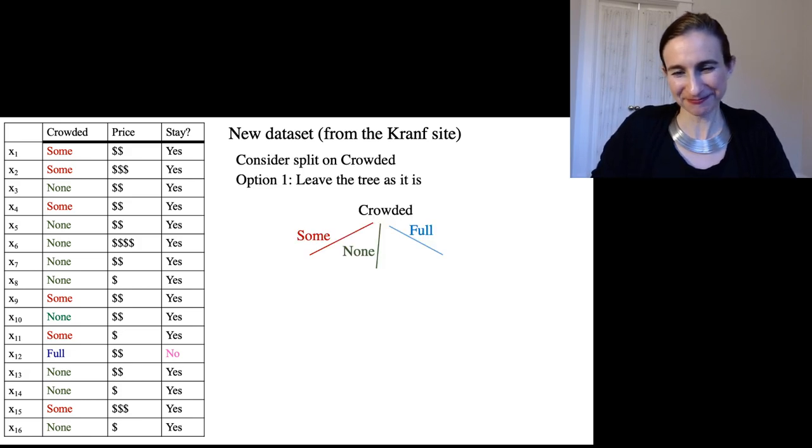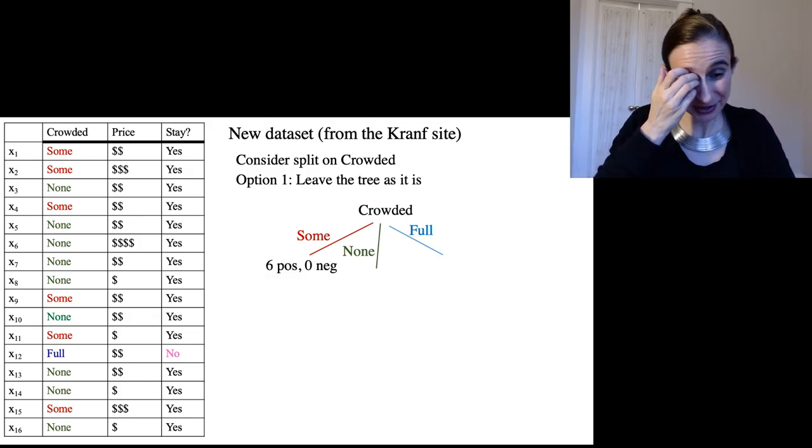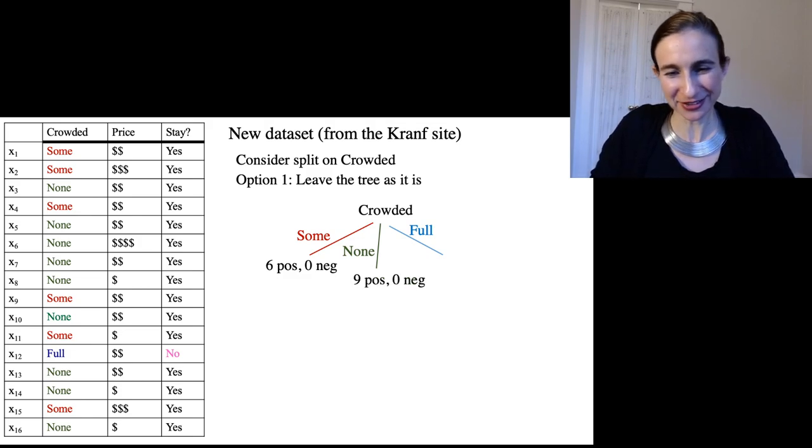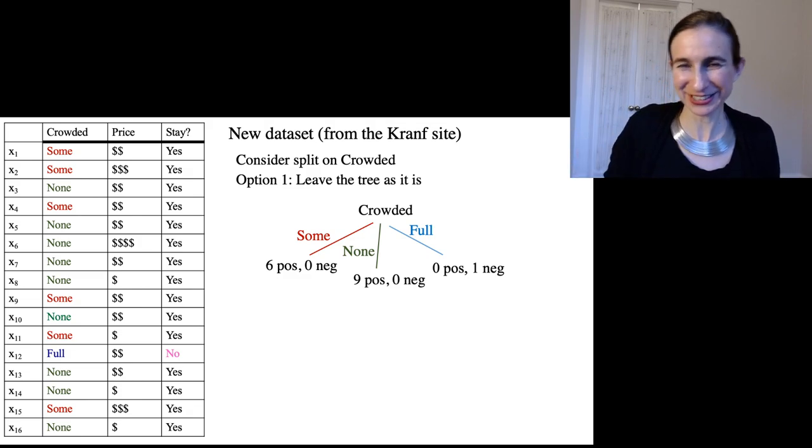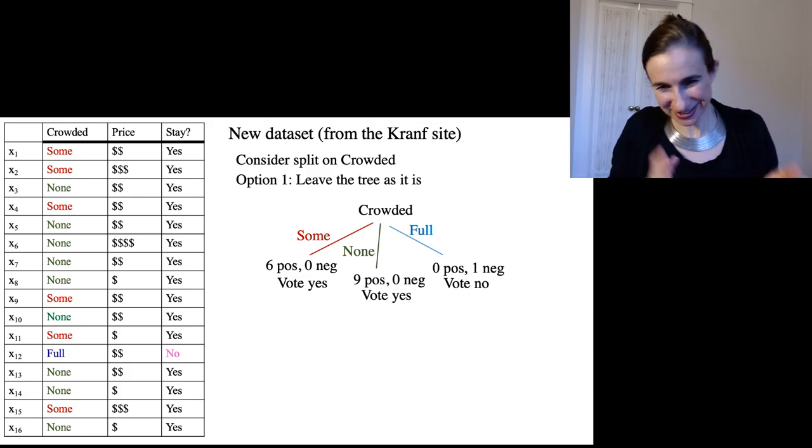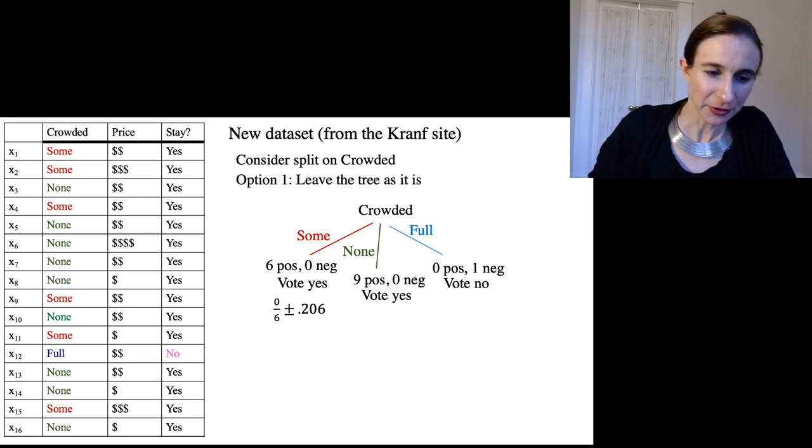Option one, you'll leave the tree as it is. That's the tree. It has six positive and zero negative in one leaf. Nine positive and zero negative in the other leaf. And then our one negative landed in its own leaf. Okay, so of course the leaves vote yes, yes, and no. And then I'm computing upper confidence bounds for these probabilities.